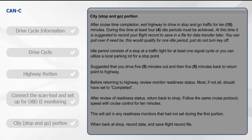City or stop-and-go portion: after cruise time completion, exit the highway to drive in stop-and-go traffic for 10 minutes. During this time, at least four idle periods must be achieved. It is suggested to record your flight report to save in a file for data transfer later. If a pull-over is needed, this would qualify for one idle period — just do not turn the key off. An idle period consists of a stop at a traffic light for at least one signal cycle, or you can utilize a local parking lot or stop point. Drive five minutes out and then five minutes back to return to the point of the highway. Before returning to the highway, review the monitor readiness status. Most, if not all, should have set to complete. After review of readiness status, return back to shop and follow the same cruise protocol speed with cruise control for 10 minutes.